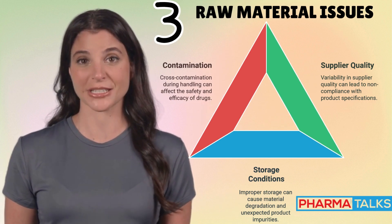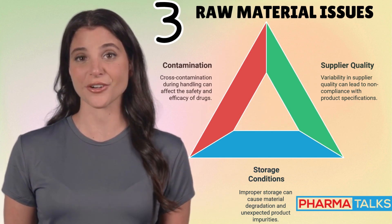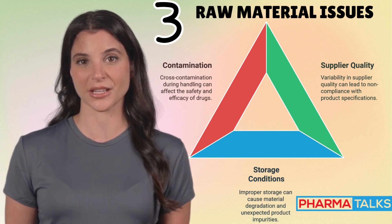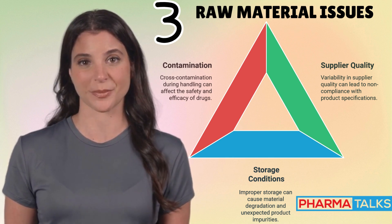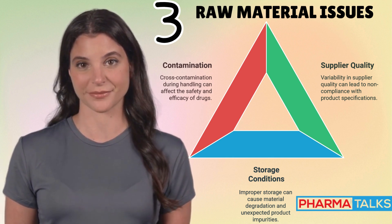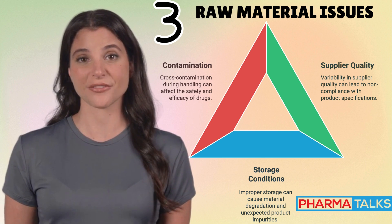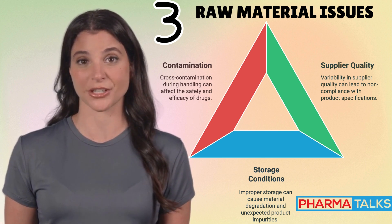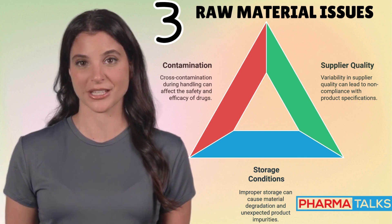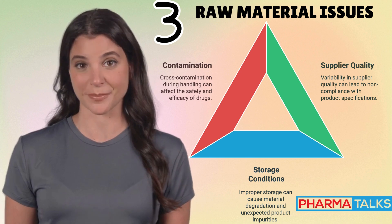Reason 3: Raw Material Issues. The third cause of OOS results is related to raw materials. The quality of raw materials plays a crucial role in determining the final product's compliance with specifications. Variability in supplier quality is one concern — if a supplier delivers raw materials that do not meet the agreed specifications, it can lead to OOS results. For example, variability in the particle size of an active pharmaceutical ingredient (API) can affect dissolution rates.